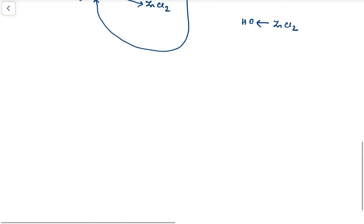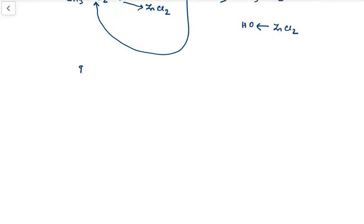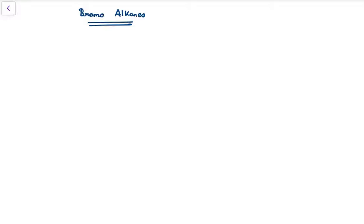This was the process to make chloroalkanes. In the case of bromoalkanes, the process is a little different. We cannot directly use HBr because it is very unstable and may decompose before the reaction takes place. So the reaction takes place in the presence of concentrated H₂SO₄.